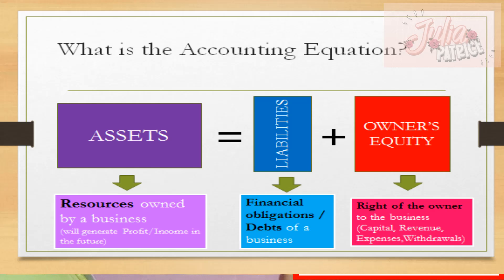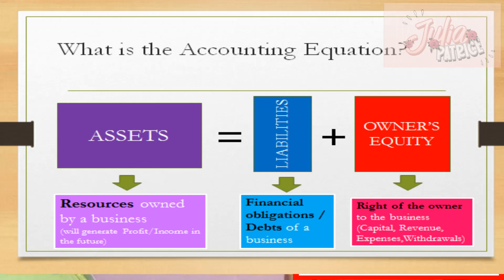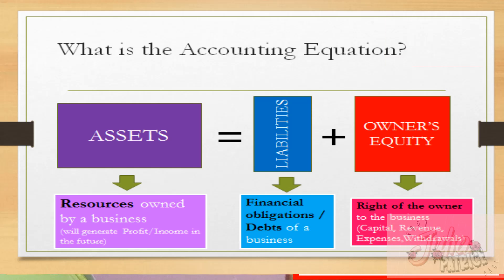Lastly, we have owner's equity, which is the residual interest of the owner of the business — meaning any assets left after paying liabilities belongs to the owner. There are four elements that affect equity; let's abbreviate them with the word CREW: C is for capital or investment, R is for revenue or income, E is for expenses — remember, a car won't run without gas, just like a business won't run without incurring expenses — and W stands for withdrawals, or the money withdrawn by the owner.